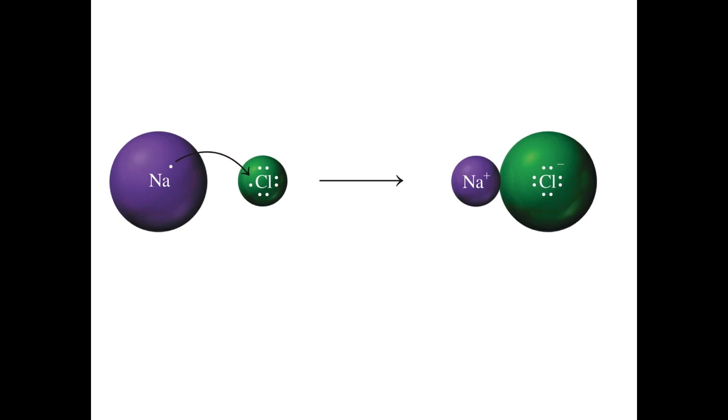Now that we have a positive charge and a negative charge, what do we know about the attraction between a positive and a negative charge? They are very strongly attracted to each other. This attraction is what we call an ionic bond. And this bonding occurs in a one-to-one ratio. For every one sodium, there is one chloride.